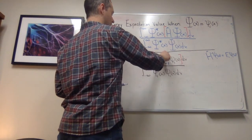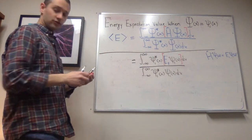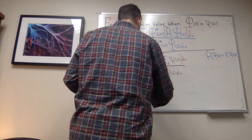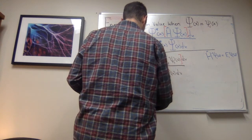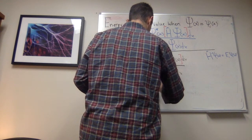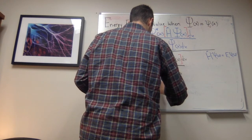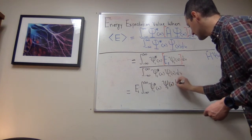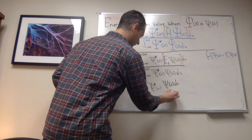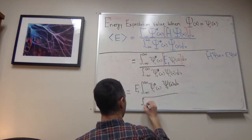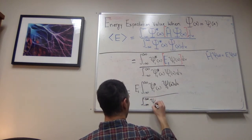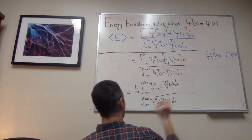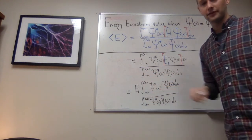Since E1 is just a number, it can be pulled outside of the integral. So the numerator becomes E1 multiplied by the integral from negative infinity to infinity of psi_1-star(x) times psi_1(x) dx. I now have E1 times that integral in the numerator, divided by the same integral in the denominator.